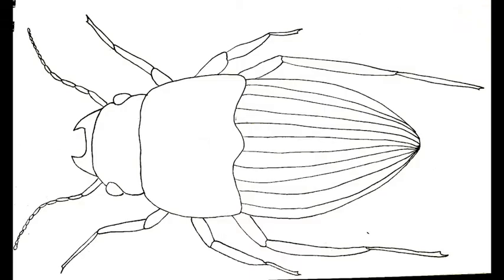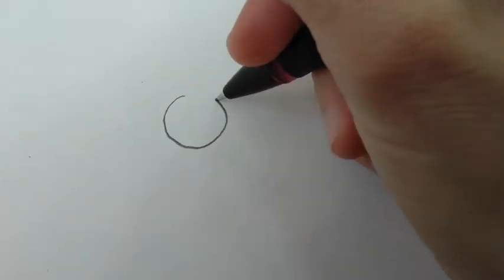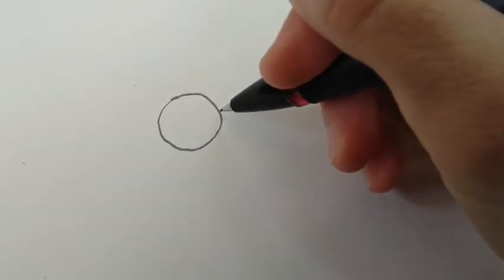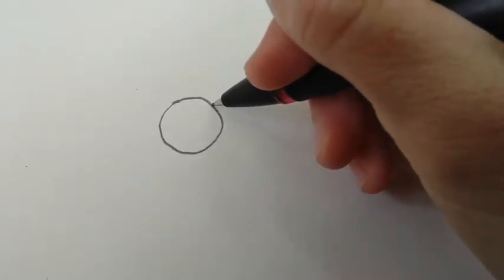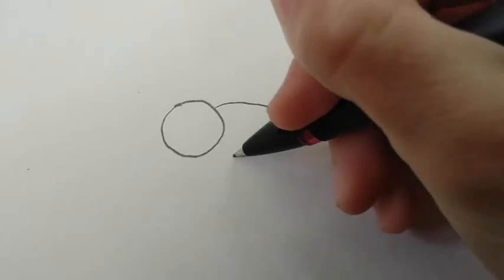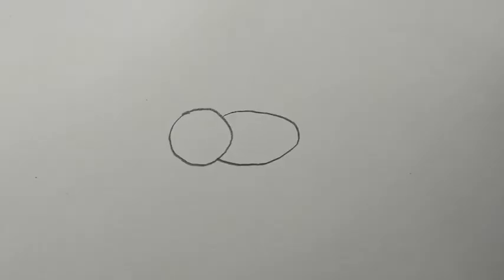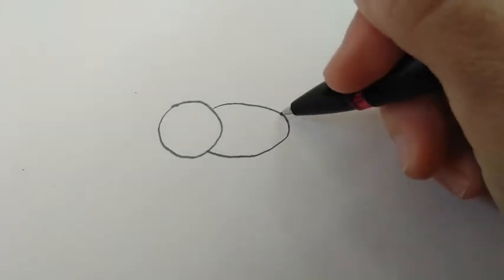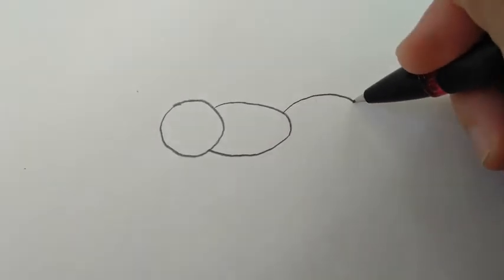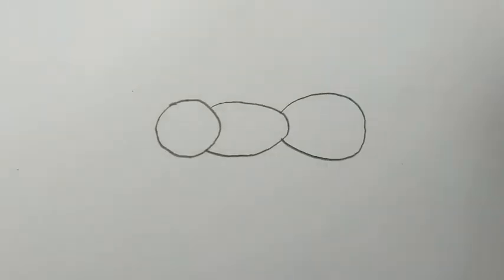So to draw an insect, I just like to break it down into the parts that we just learned. For example, I would start with drawing a head. Let's just draw a circle head for this insect. The next part I need to draw is the thorax, and for that you can just draw sort of an ovally circle underneath the head. And finally we've got to put on the abdomen — that's the third part — just do another circle-y oval at the bottom there.